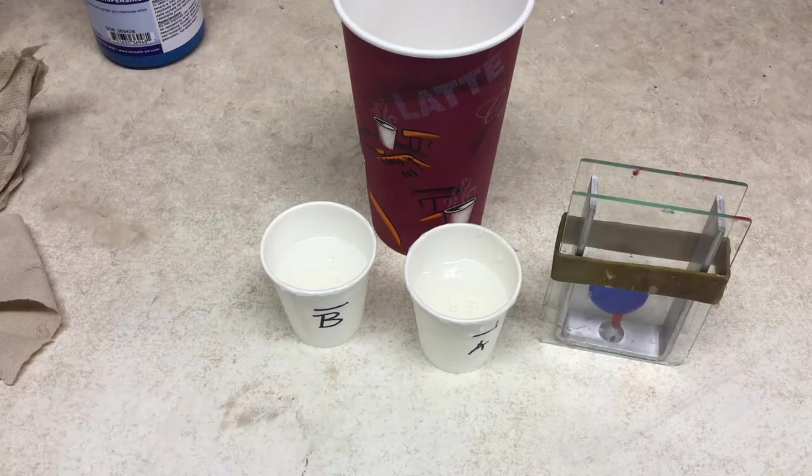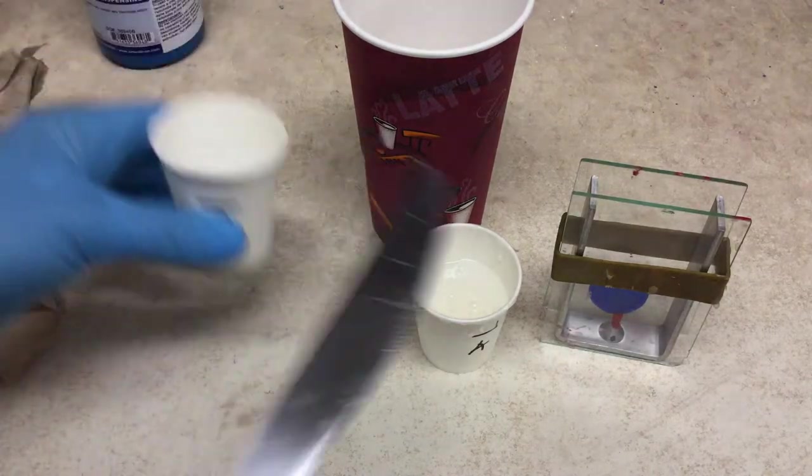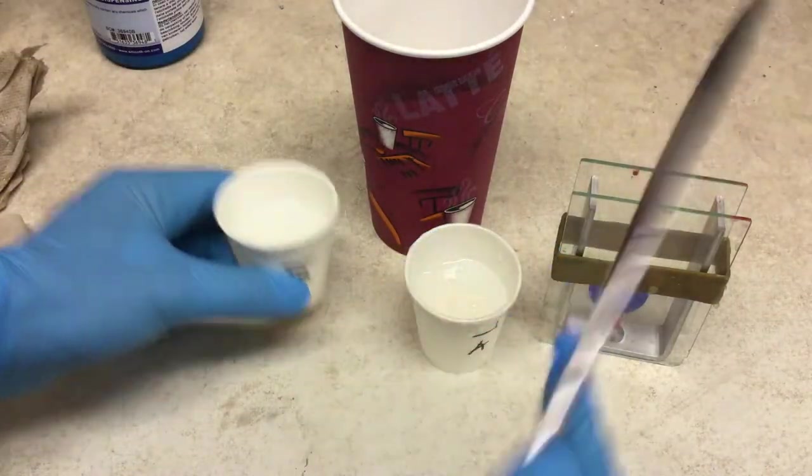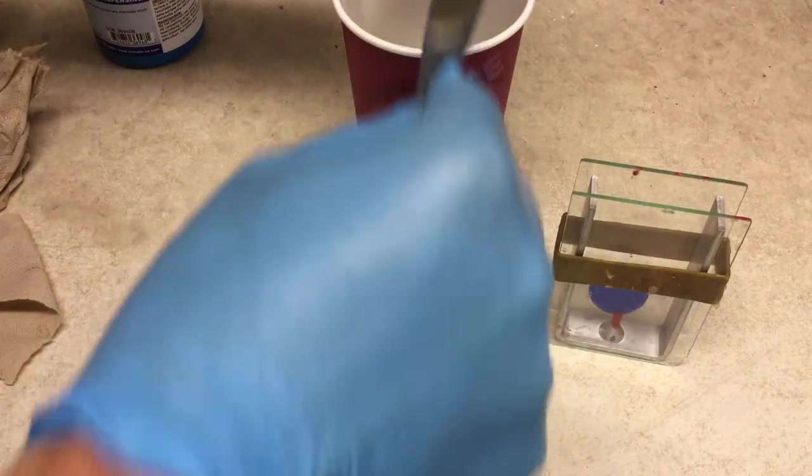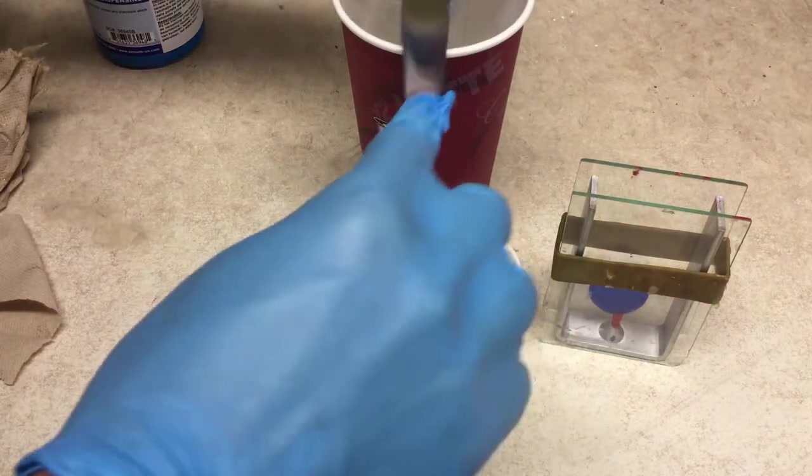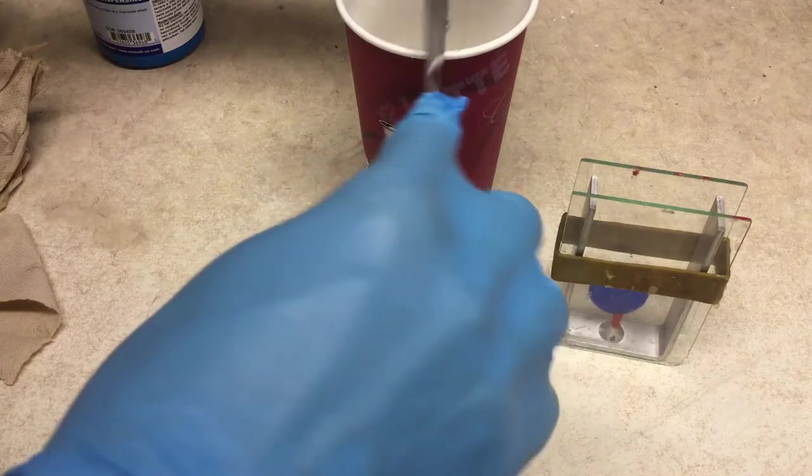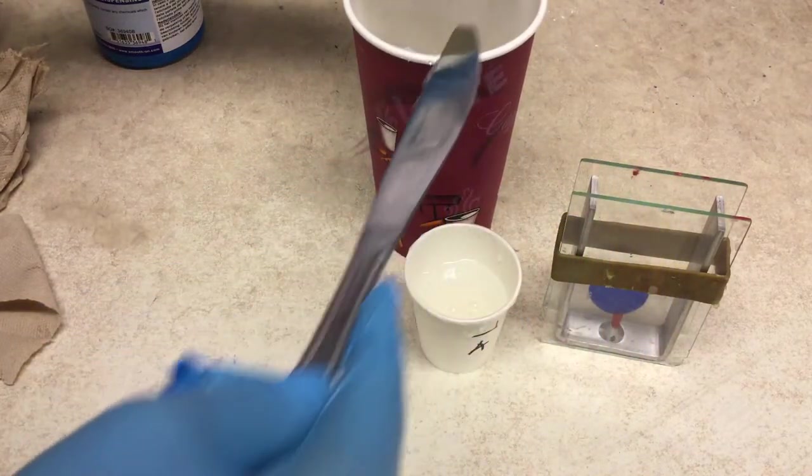Okay, so we have equal volumes of part A and part B of our Sorta Clear 37 silicone, and we're using the knife to get all of the material out and into the larger cup. This is important so that we make sure we get all of the silicone uniformly mixed into one vessel.